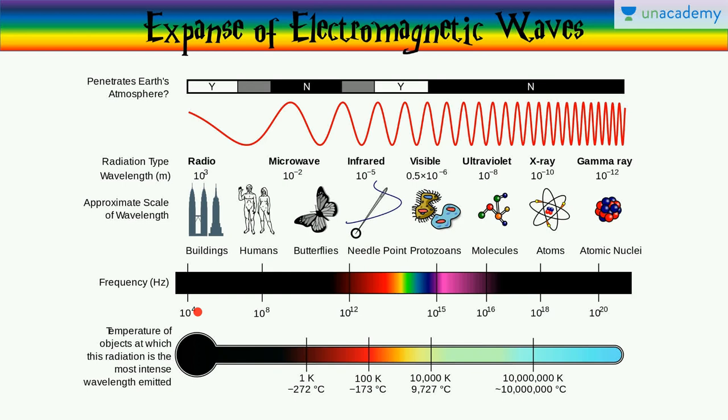would emit the light most intensively at a particular wavelength. If the temperature of the body was just 1 Kelvin, the peak wavelength that would be emitted would be in the microwave region. But if the temperature of the body was 10 million Kelvin, it would emit in x-rays.